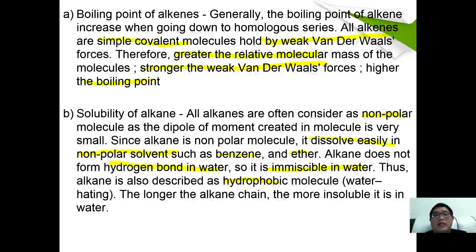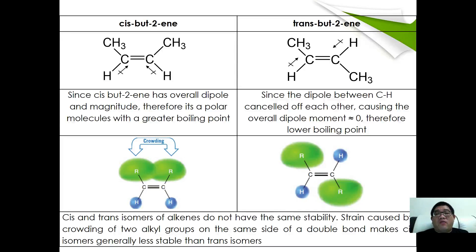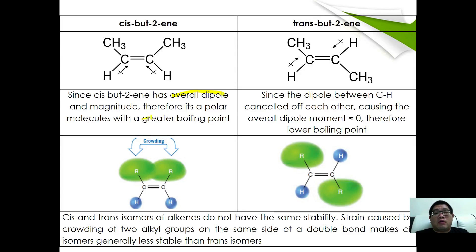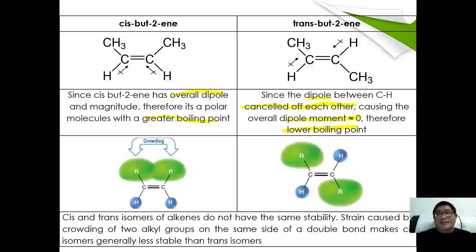There is also a difference in boiling point between cis and trans isomers. Cis-but-2-ene has an overall dipole moment, so it has a greater boiling point. Trans-but-2-ene has dipoles that cancel each other out, so the overall dipole moment is approximately zero, giving a lower boiling point. That covers the physical properties of cis and trans alkenes, and that is all from the fourth video. We will continue in our next lesson — see you all around, thank you.